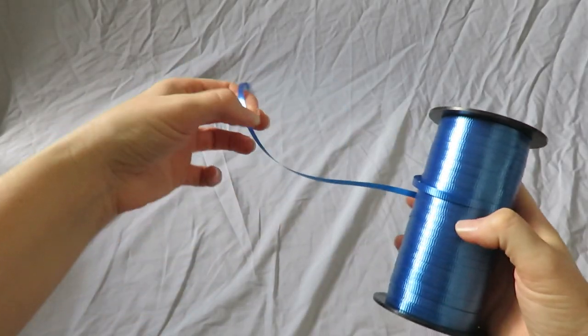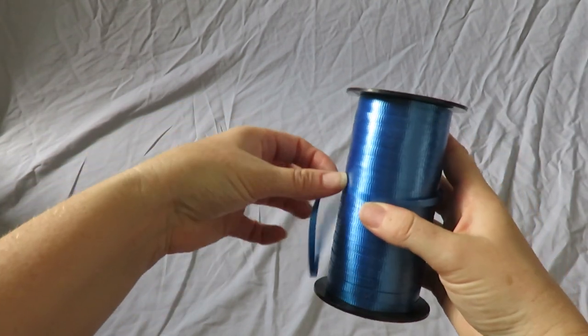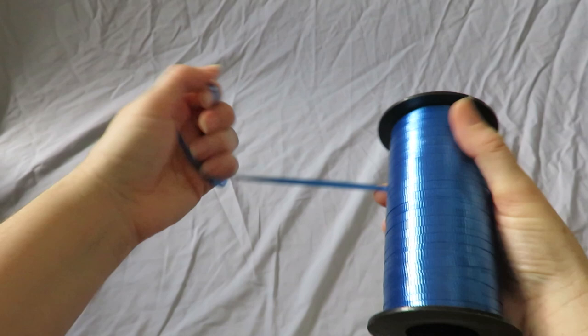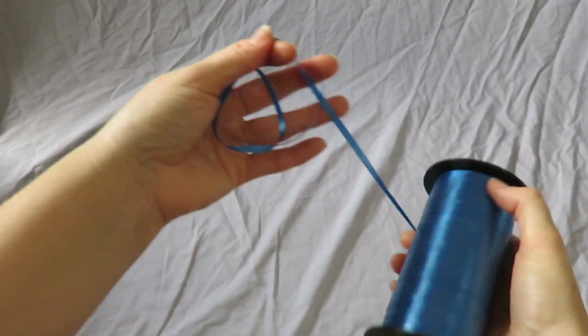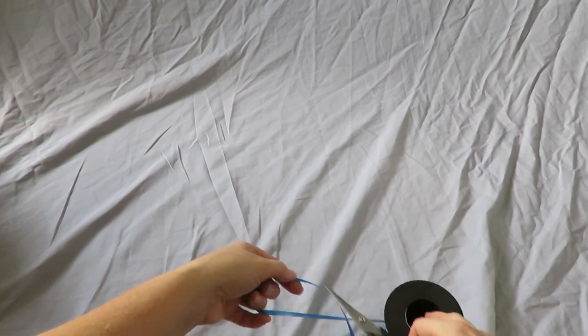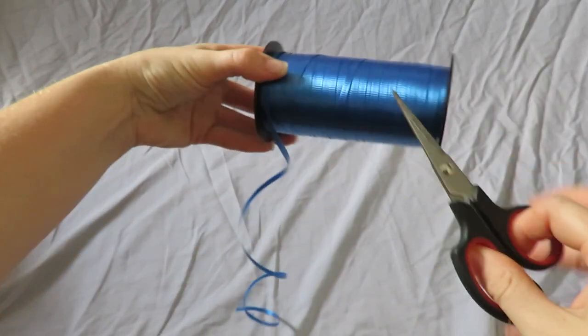Okay, so we've got this curling ribbon, and you're going to want to find the natural curl. It has a natural curl from where it was wrapped around the reel, and that is what we want to find. See that? Let's cut a piece here.